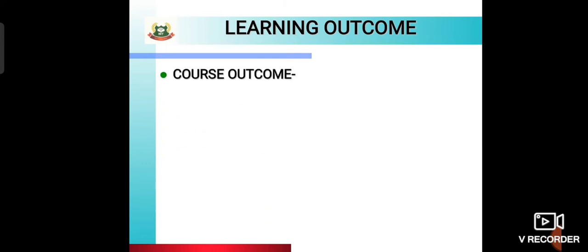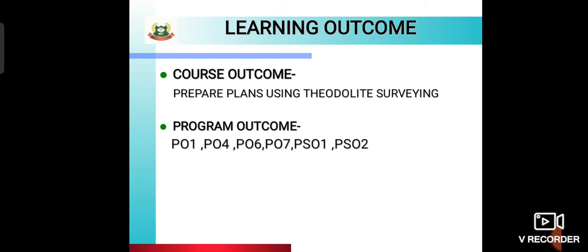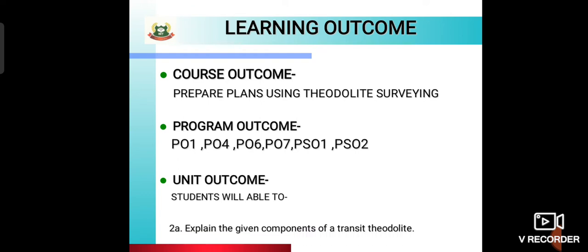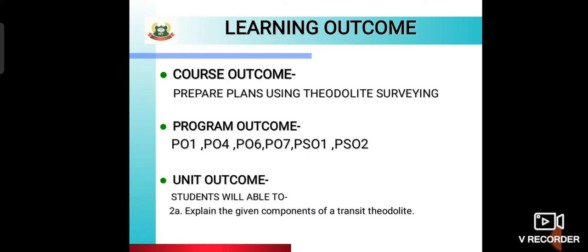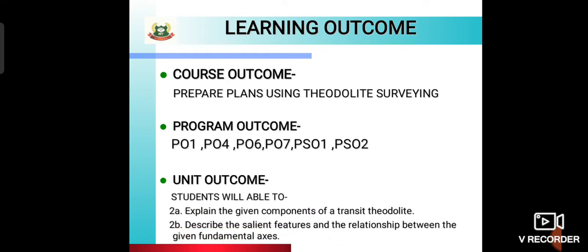Learning outcome: the course outcome you will be achieving after this unit is you will be able to prepare plans using theodolite surveying. Program outcomes are PO1, 4, 6, 7, PSO1, PSO2. The unit outcome is: student will be able to explain the given components of transit theodolite and describe the salient features and the relationship between the given fundamental axes.